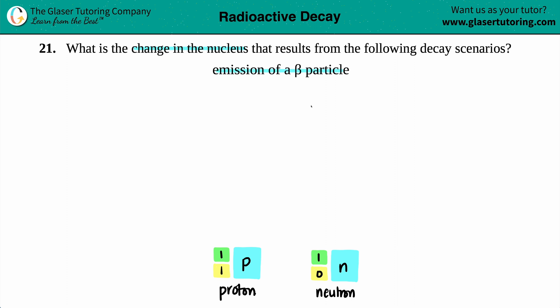Okay, so this question basically says, what's going to happen to the nucleus if we emit a beta particle? Well, the first thing is, what are the subatomic particles that are part of the nucleus? Well, the two subatomic particles are your protons and your neutrons.